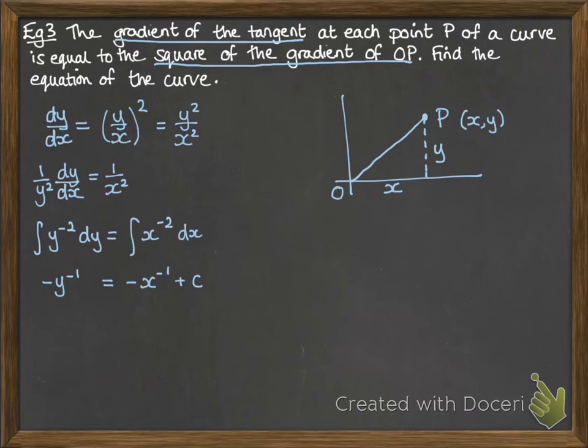So if we go ahead and do those integrations, y to the minus 2 becomes minus y to the minus 1, and we get minus x to the minus 1 on the right-hand side, and then of course our plus c. So just rewriting that as a fraction to make it a little easier to see, we get this.